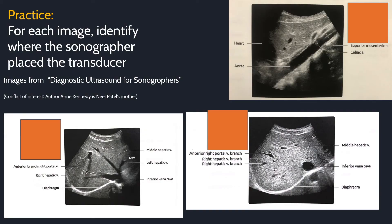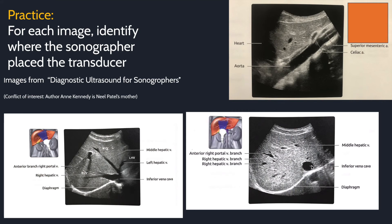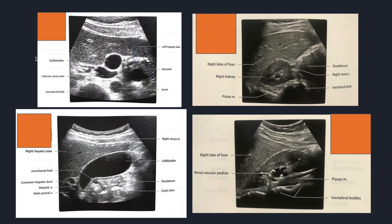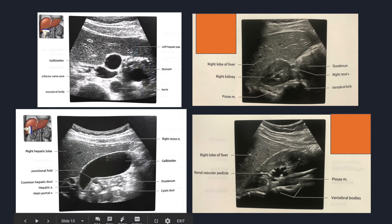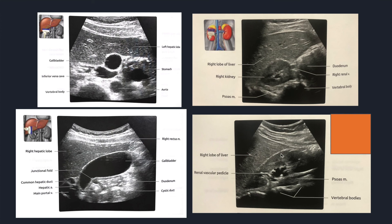To finish up, let's do some practice. Look at these images and see if you can identify where the sonographer placed the transducer. Transverse through the liver, looking superiorly — you can see the hepatic veins draining into the IVC. Transverse through the liver but more inferior, because the IVC is a circle and the hepatic veins are further out. Long axis of the liver. Transverse through the gallbladder. Long axis through the gallbladder. Short axis through the kidney. Long axis of the kidney.